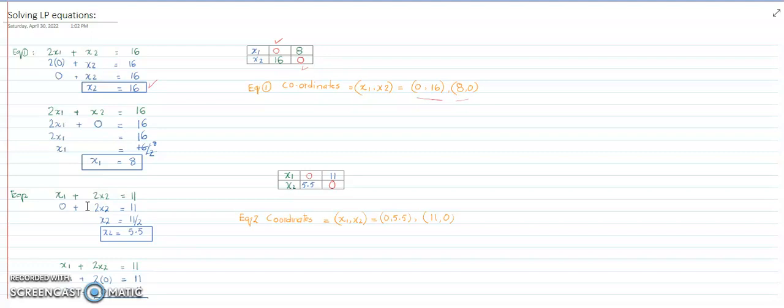We are assuming that x1 is 0, so what is the value of x2? When x1 is 0, x2 equals 11 divided by 2, which is 5.5. So when we put x1 as 0, we got x2 as 5.5.